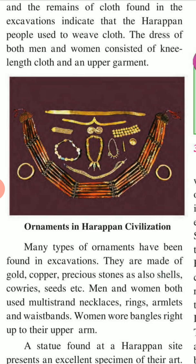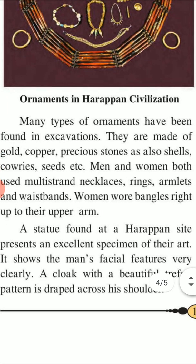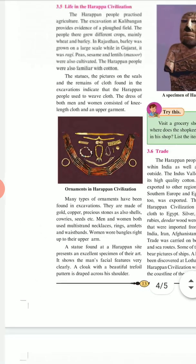The statues, the pictures on the seals, and the remains of cloth found in the excavation indicate that the Harappan people used to weave cloth. The dress of both men and women consisted of a lower cloth and an upper garment. There were ornaments in the Harappan civilization — many types of ornaments have been found in excavations. They are made of gold, copper, precious stones, shells, and seeds. Men and women both used multi-strand necklaces, rings, armlets, and waist belts. Women wore bangles right up to their upper arms.